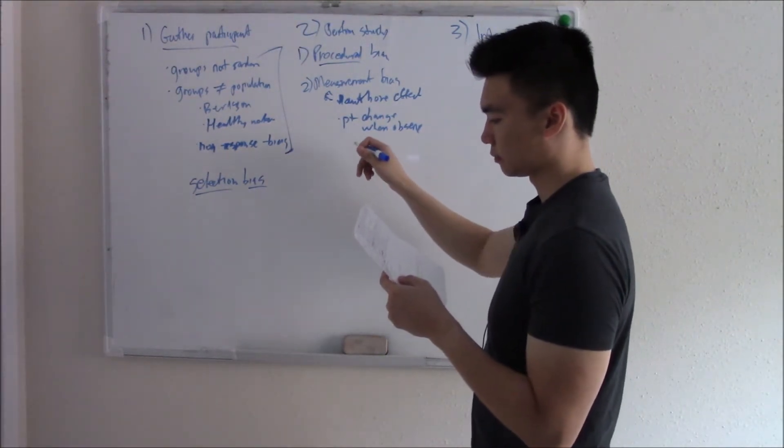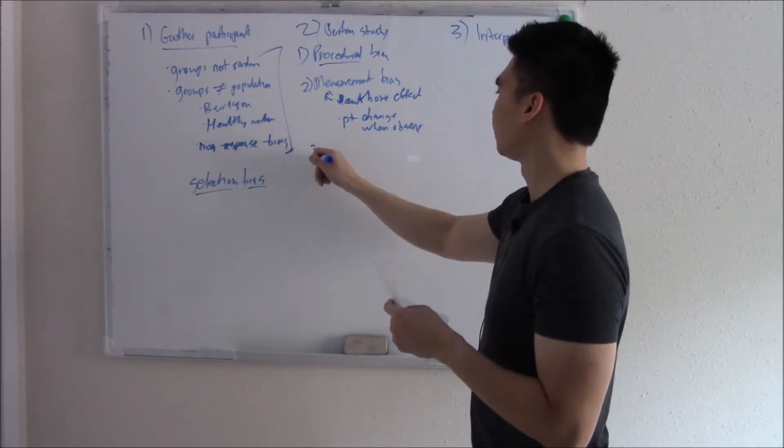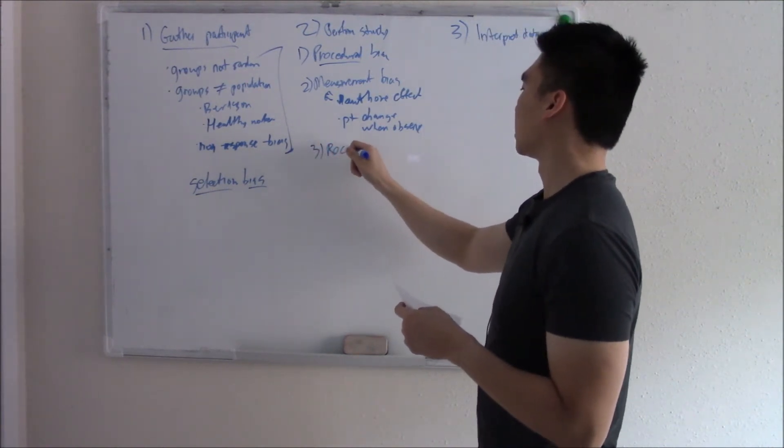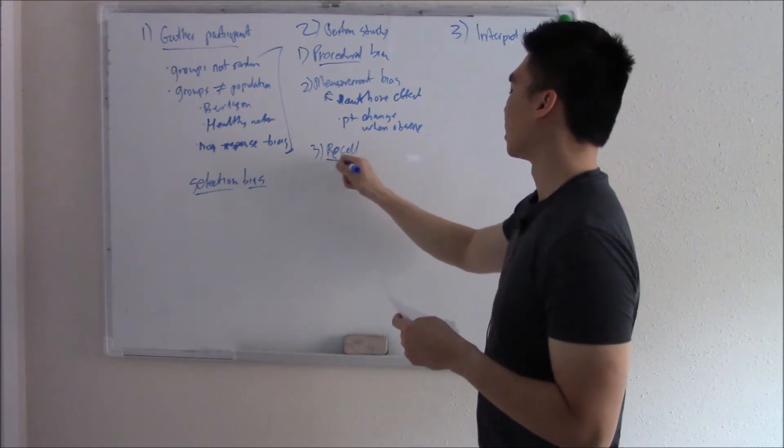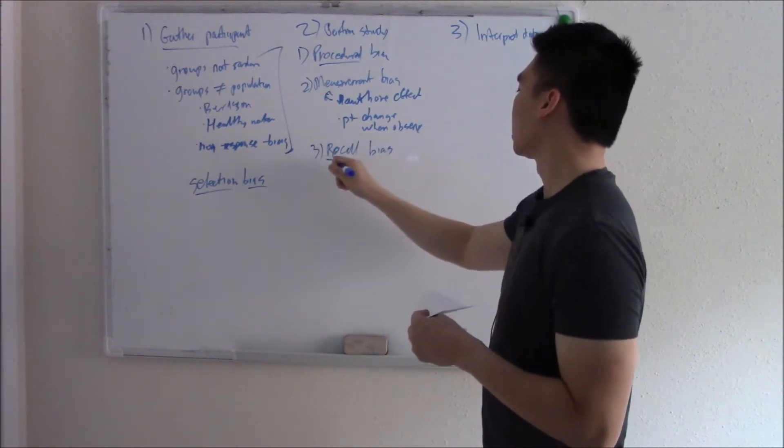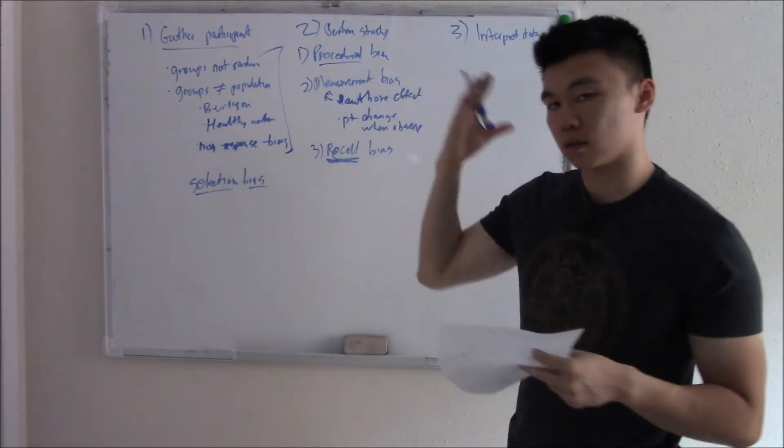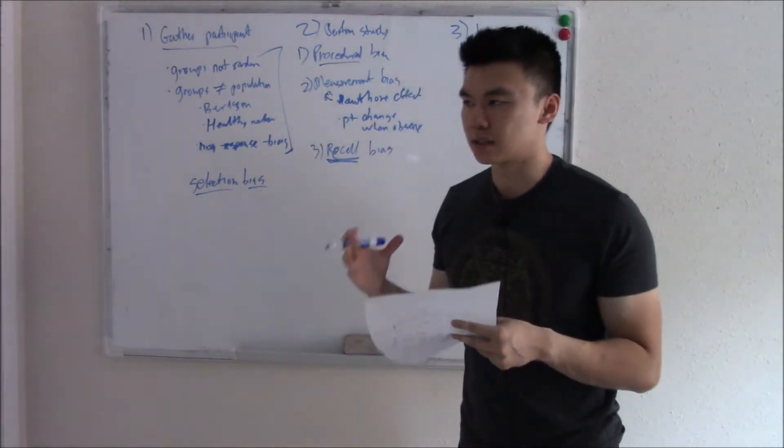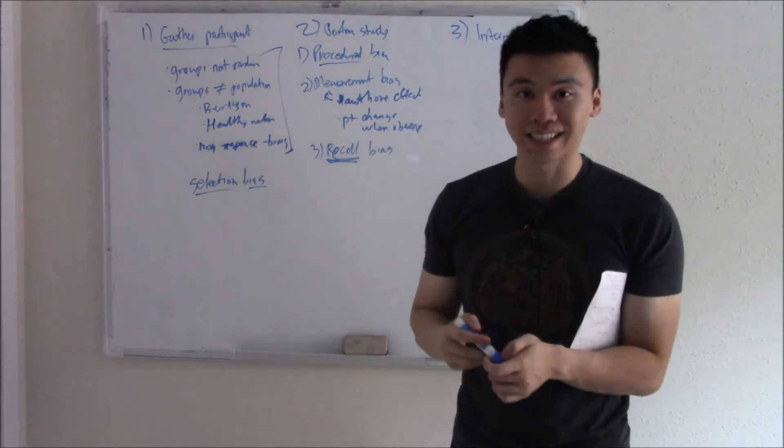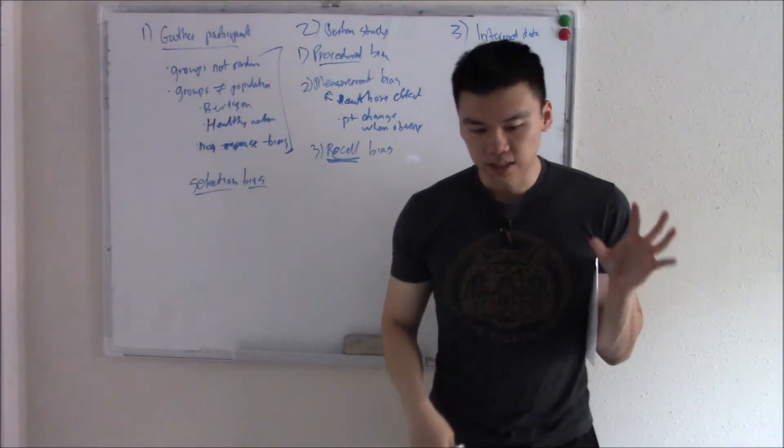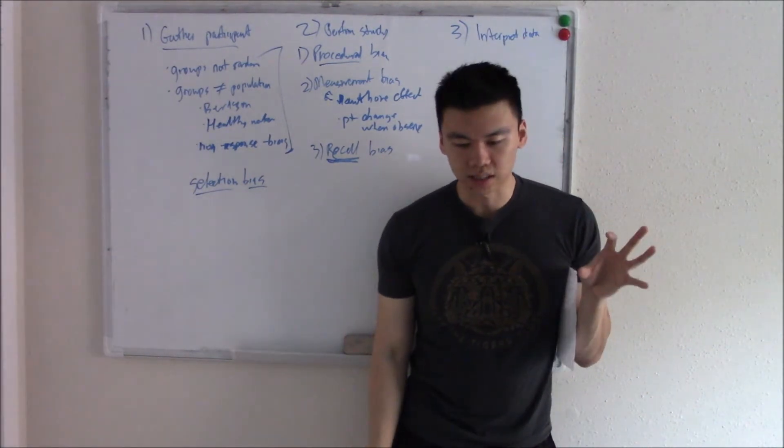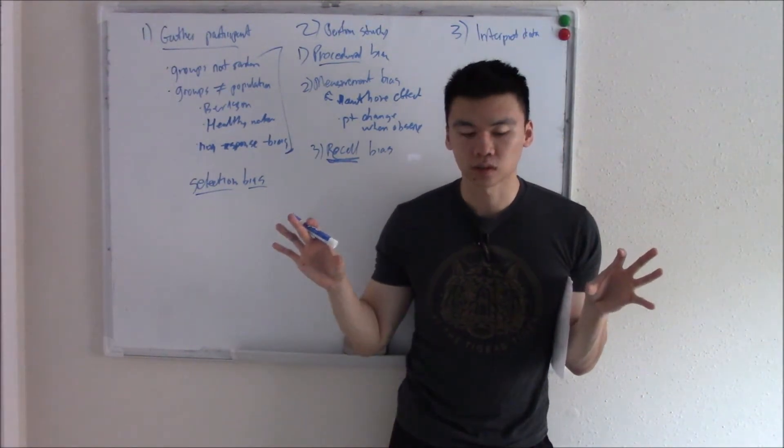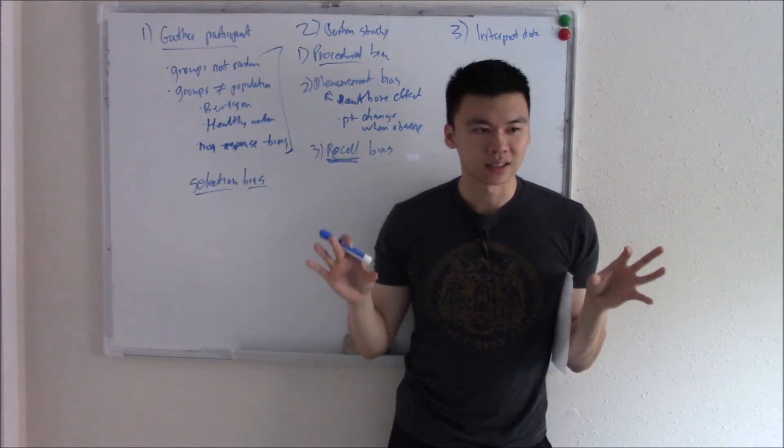You have something called recall bias. This occurs when patients try to recall something. Try and go back in their memory and sometimes that can be skewed or sometimes that can be incorrect altogether. Classic example, we didn't know for a while that asbestos causes cancer. So if you ask these people, have they ever been in a shipyard, ever been exposed to roofing asbestos? They'll be like, no, never had.